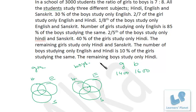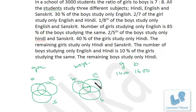Once you complete the Venn diagram, all the problems can be solved instantly. 30% of the boys study only English — 30% of 1600 means 480 boys study only English. Only English is this region, so 480 will go over here.